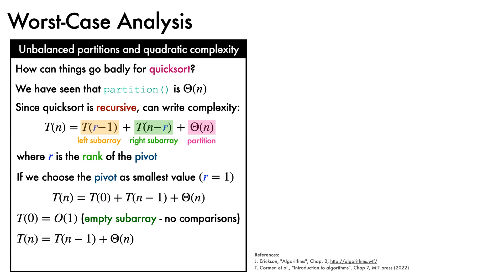The solution to this expression, as we'll see shortly, is T(n) equals big theta of n squared. In fact, more generally, we have that T(n) is big theta of n squared for any fixed value of r that is not dependent on n.